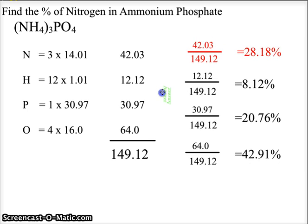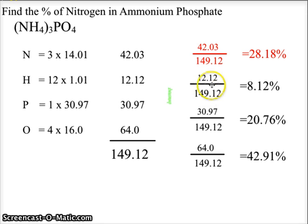Again, we will find the percent composition of each of the elements. Now the actual question asks for nitrogen, and that's in red, 42.03 divided by 149.12, meaning that we will get a 28.18 percent nitrogen in the compound ammonium phosphate.